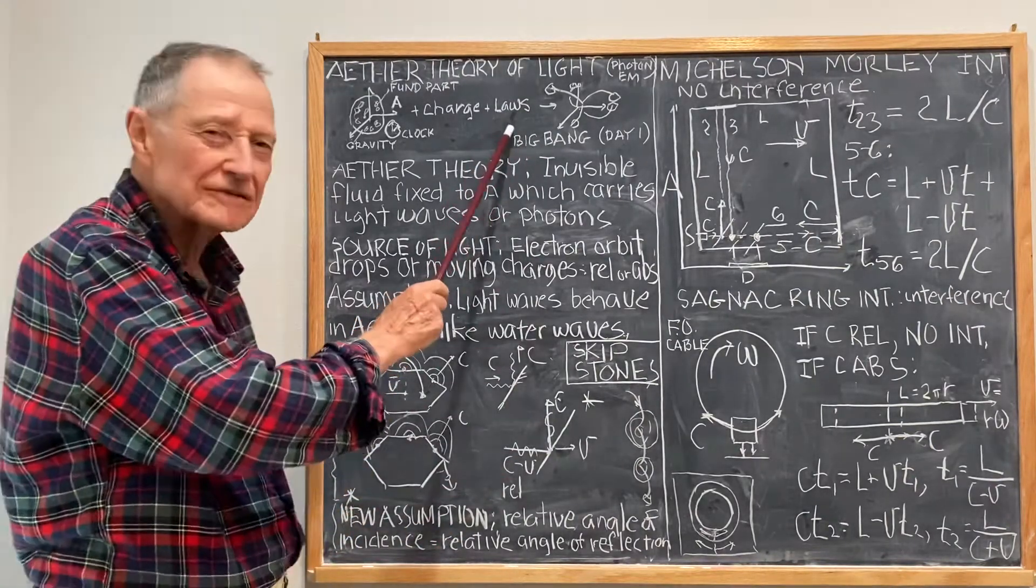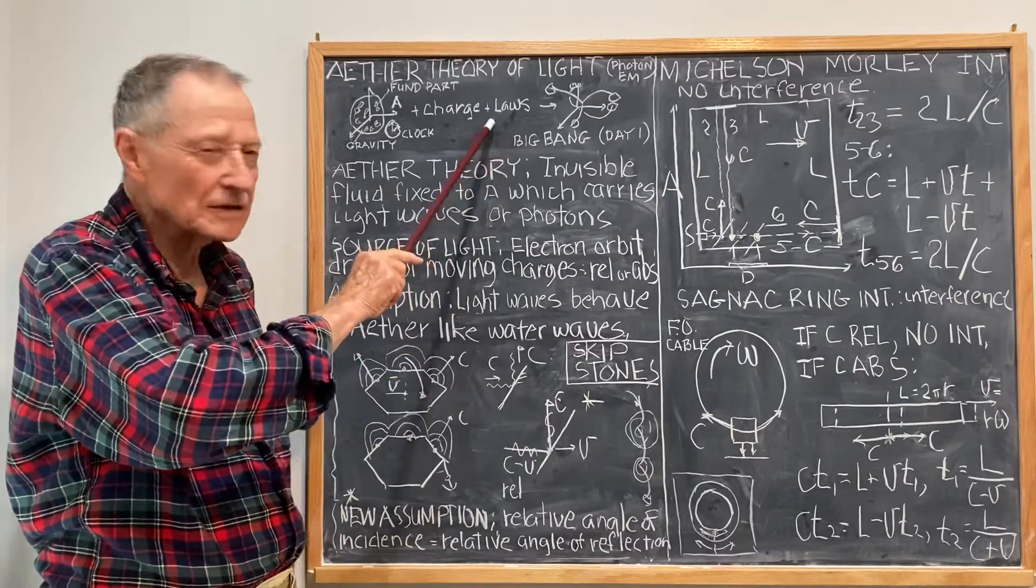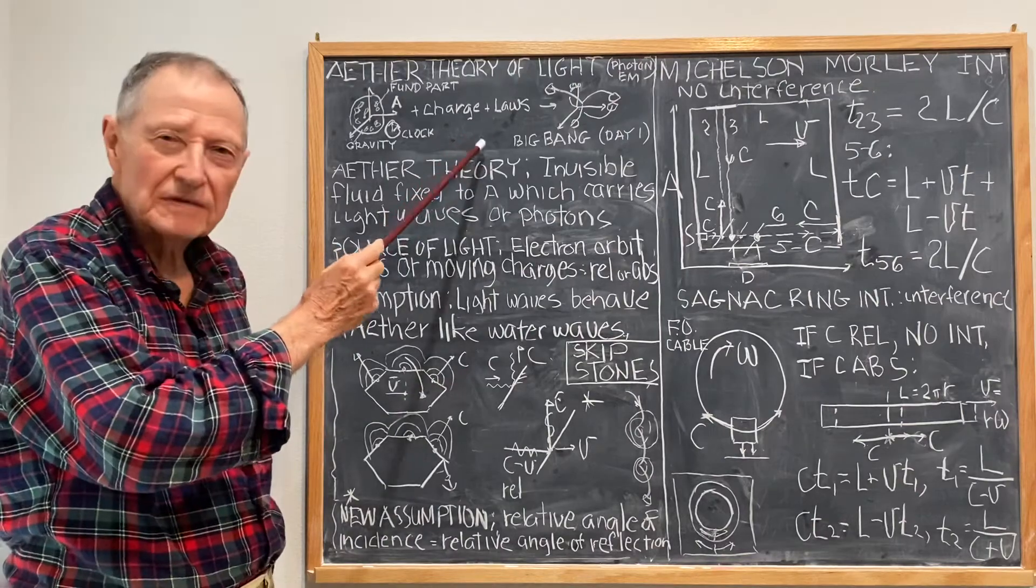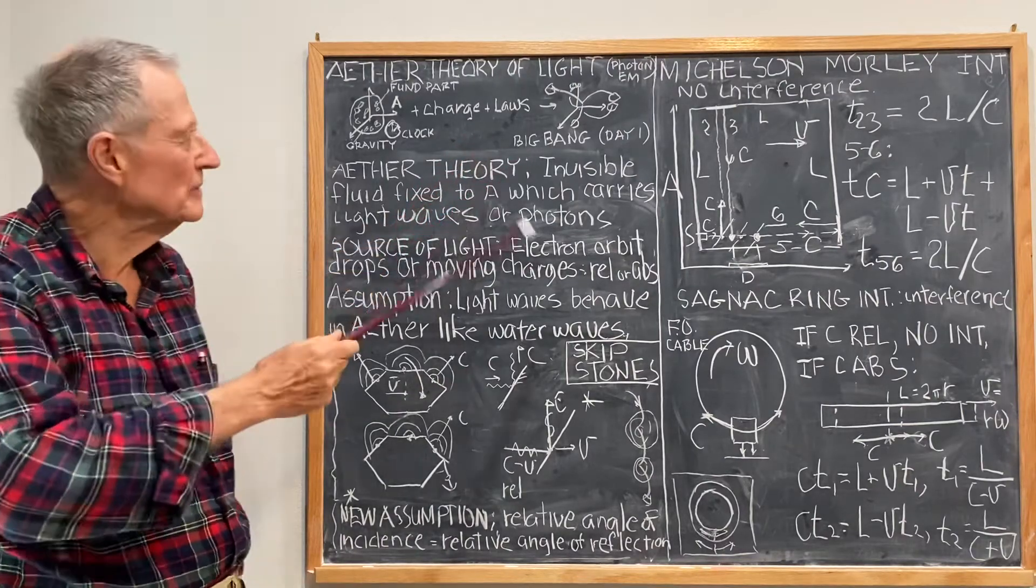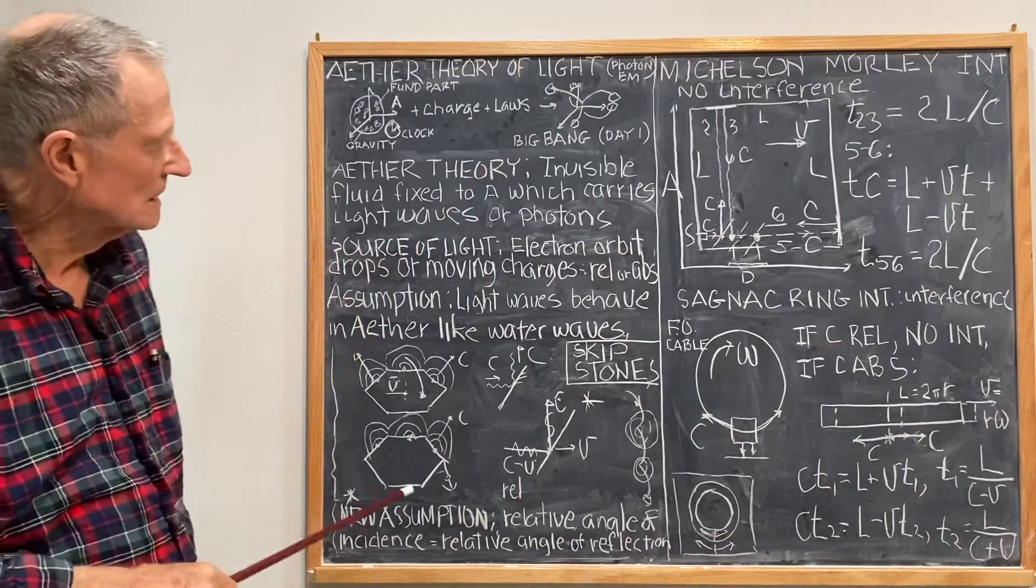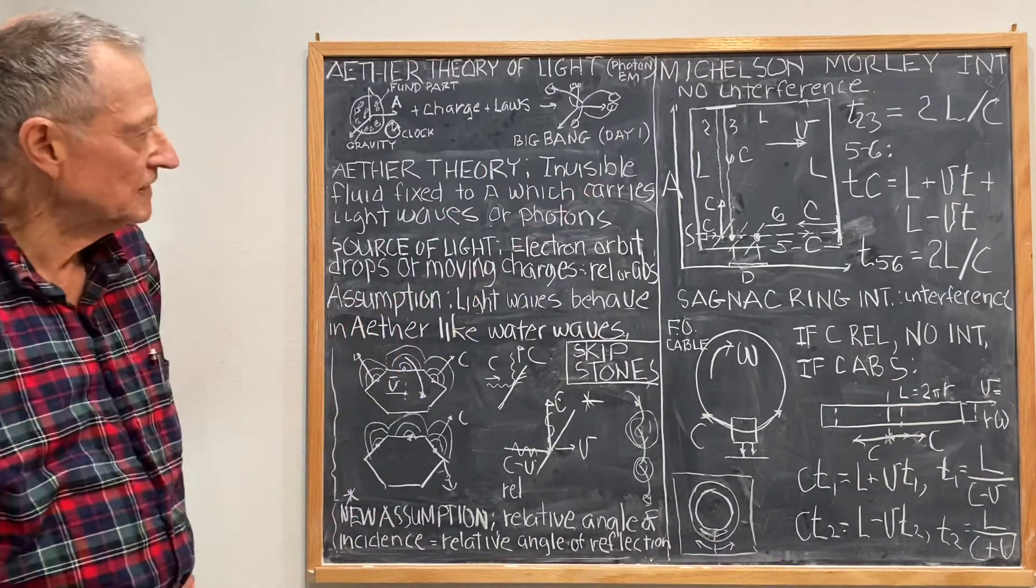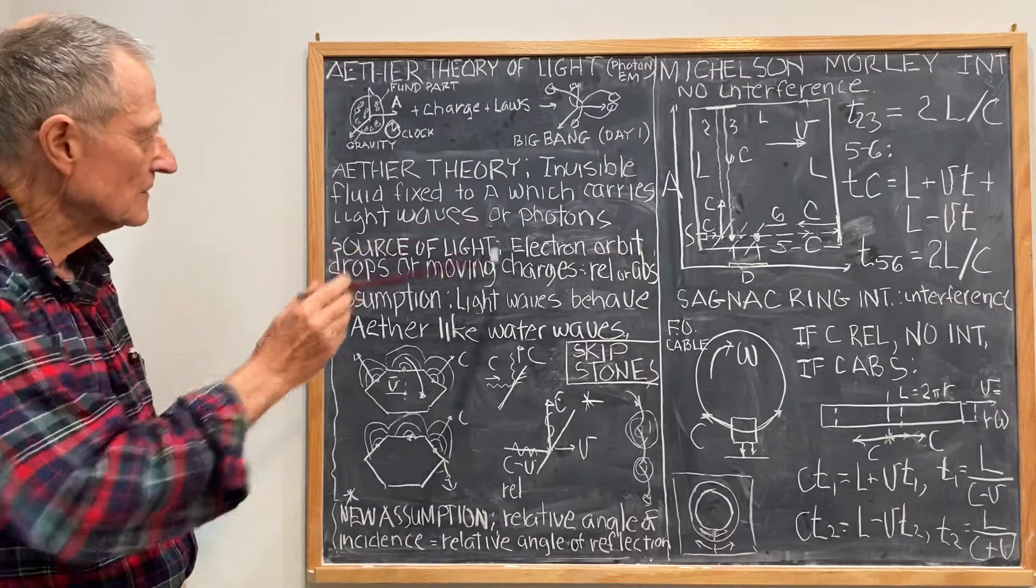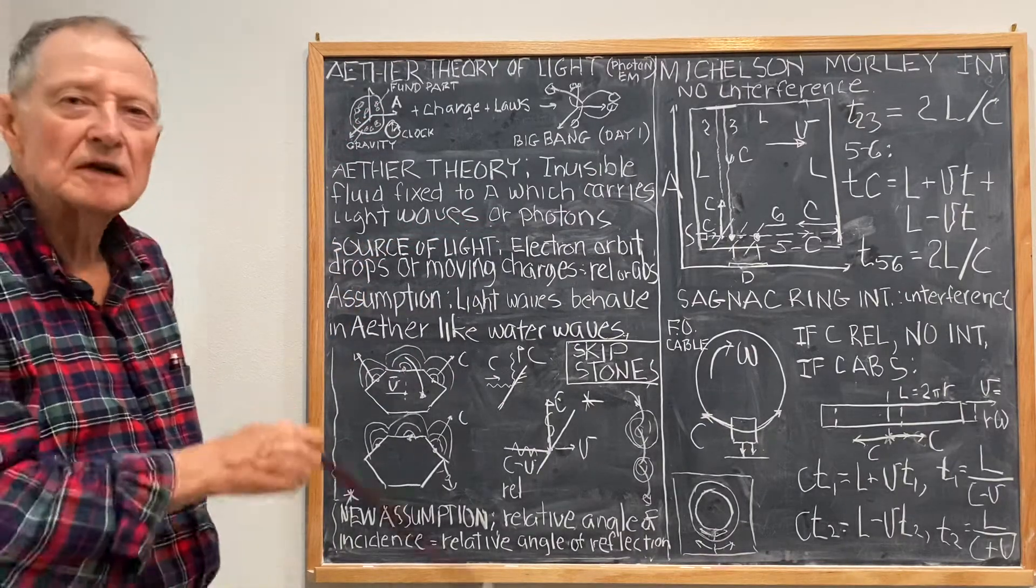I'm assuming that the laws of physics apply, in particular, conservation of linear and angular momentum with respect to the absolute coordinate system. Now, the ether theory says that there's an invisible fluid fixed to the absolute coordinate system A, which carries light waves or photons.